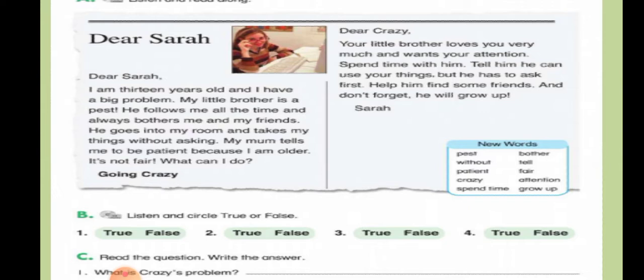Now listen and circle true or false. Number one: 'Crazy is 13 years old.' — True. Number two: 'Crazy is younger than her brother.' — False. Number three: 'Her brother bothers their mother.' — False. Number four: 'Her brother borrows her things without asking.' — True.